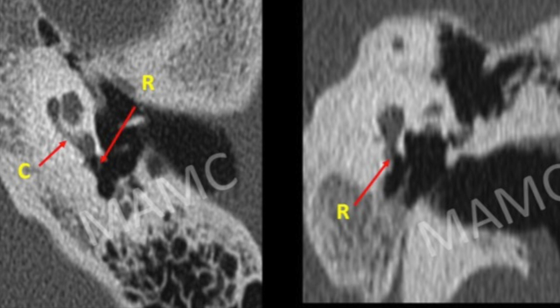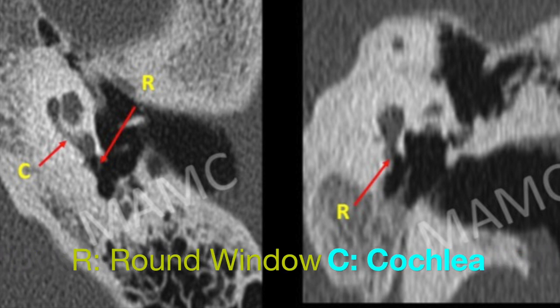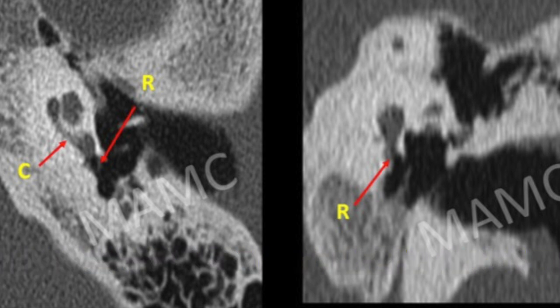Axial and coronal sections at the level of the round window niche — this is the level of the basal turn of the cochlea — and the round window niche can be well evaluated on both axial and coronal sections.